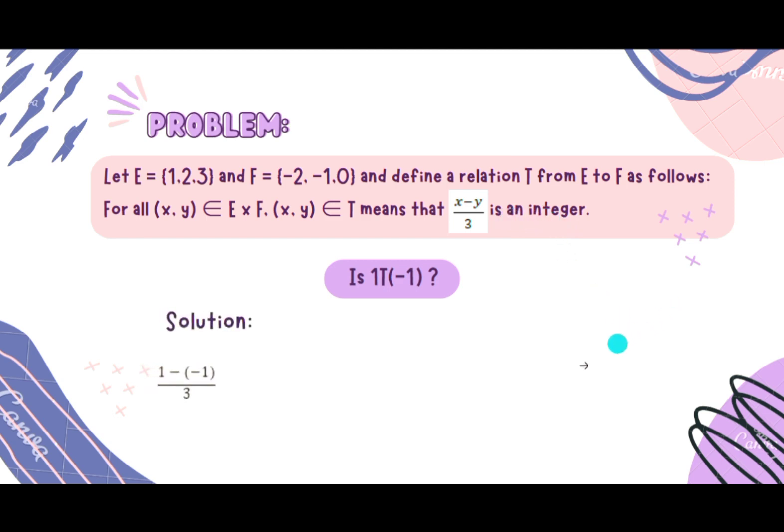We will have 1 minus -1, which equals 2, divided by 3, equals 0.666 or 0.67, which is a decimal number and not an integer. So the answer is no. 1 is not related to -1.